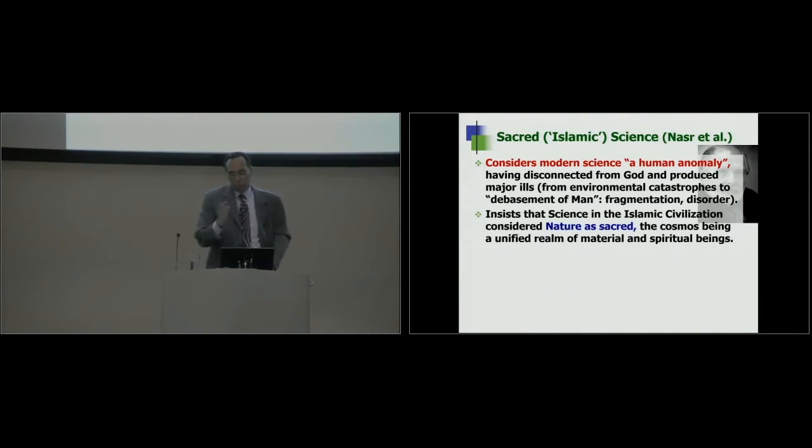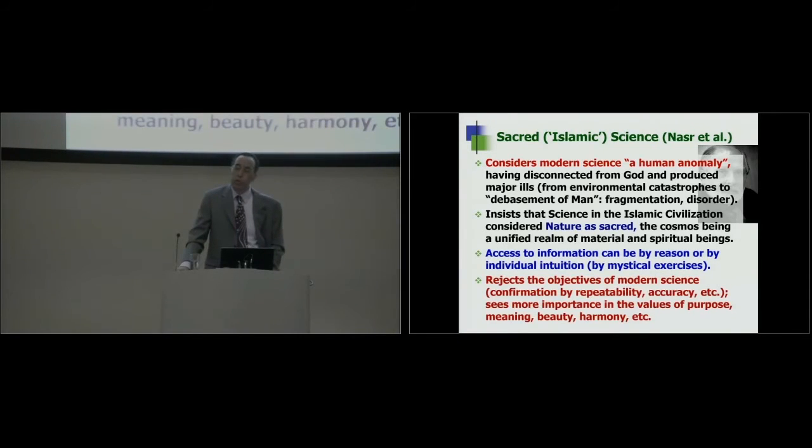So he says, you cannot discuss phenomena in nature without including in your considerations the spirit, the angels, God. And he says, actually, science should not only proceed through experimentation, but we can get truths from mystical exercises. I can just sit here and contemplate and receive some truths, and that should be a valid source of knowledge. You cannot tell me where is the experiment, where is the proof for this. And so he rejects the objectives of modern science. He says, yeah, confirmation by repeating and by accuracy. He says that that's not important. What's important, he says, is meaning, purpose, beauty, harmony. That's what we need to get from science, not how accurate is the result and how much your prediction fits with the experimental results.